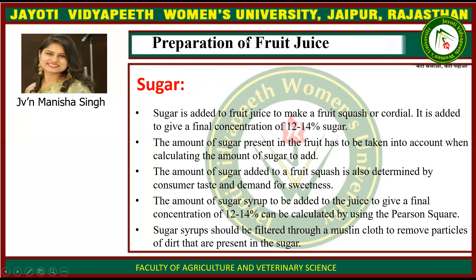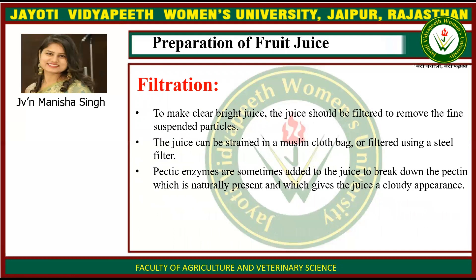The amount of sugar present in the fruit has to be taken into account when calculating the amount of sugar to add. The amount of sugar added to the fruit squash is also determined by customer taste and demand for sweetness. The amount of sugar syrup to be added to the juice to give a final concentration of 12 to 14% can be calculated using a Pearson square. Sugar syrup should be filtered through a muslin cloth to remove particles of dirt present in the sugar.